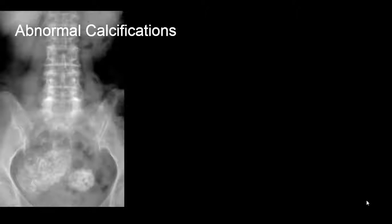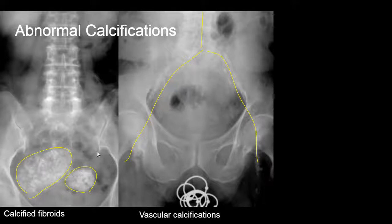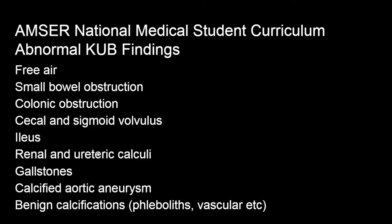Here are some more examples of abnormal calcifications. On this radiograph we see coarse dystrophic calcifications in the pelvis, which are seen with calcified fibroids. We also see abnormal linear calcifications that are vascular — these represent severe vascular calcifications. Finally, calcifications here correspond to calcified gallstones. This is a summary of some of the important findings we can see on abdominal radiograph.